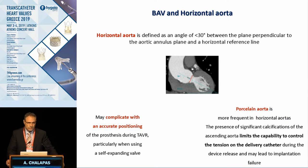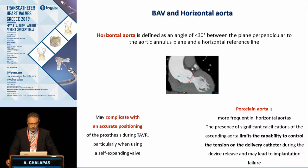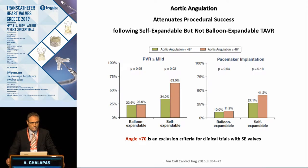Another important piece of information from CT analysis is the presence or absence of a horizontal aorta, which is another frequent association. The horizontal aorta may complicate accurate valve positioning because it affects the ability to control the delivery system, and it is also associated with a higher incidence of porcelain aorta.